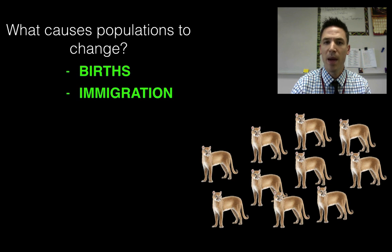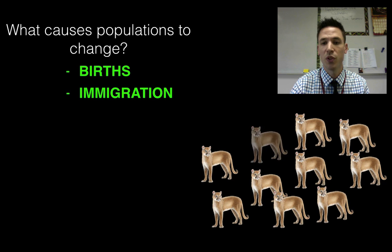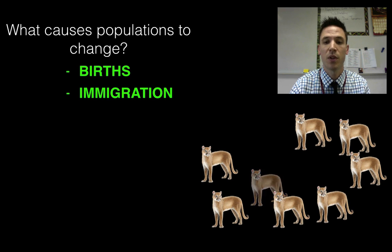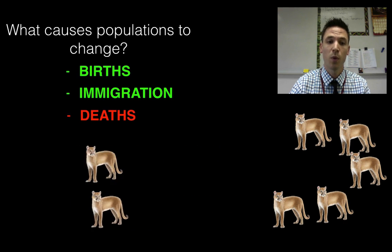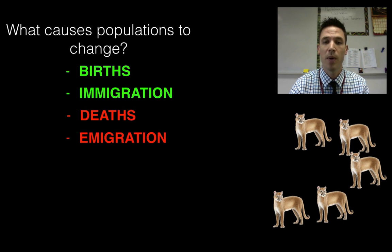What sort of things are going to cause my panther population to decrease? Well, we can get the opposite of births which is unfortunately death. So if some of these start to die off the population would fall, and if others just decide they don't like it there and want to move out and go to somewhere else, emigration will cause the population to fall.